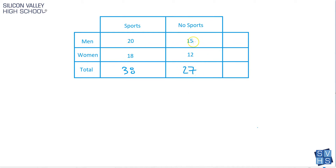What about just men, period? How many men are there total? Forget sports, no sports — just total men. You add across and quickly come up with 35. Same thing with the women: 18 and 12 would be 30. What's interesting is when you add these columns down, if you added all the men and the women you get 65, which should absolutely equal the sum of 38 plus 27 — and it does.